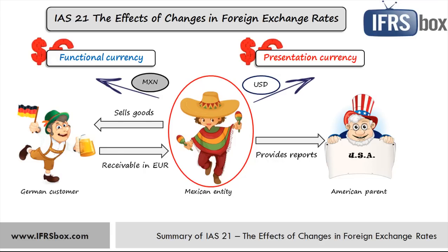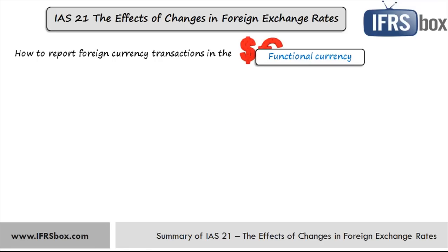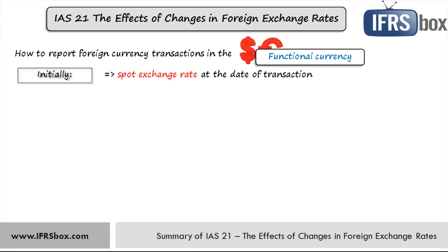How shall we report foreign currency transactions in the functional currency? Initially — meaning when the transaction occurs for the first time, like a payment or sale — all transactions are translated using the spot exchange rate between the functional currency and the foreign currency. The spot rate is the rate for immediate settlement, the one that applies for actual card transactions.